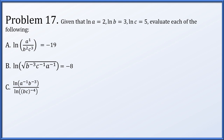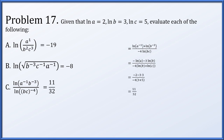For part c, the natural log of a to the minus 1 times b to the minus 3, divided by the natural log of bc to the minus 4. In the numerator, we break the product into a sum of two logarithms with exponents brought out as scalar multiples. In the denominator, the exponent of minus 4 is a scalar multiple, and the natural log of bc becomes ln b plus ln c, with the minus 4 distributing across that sum. Substituting known values and simplifying gives 11 over 32.